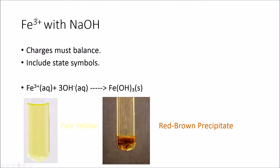Finally, Fe3+ with sodium hydroxide. This time there's a different charge: 3+. To balance the charges to zero, we need three OH- ions, giving Fe(OH)3 with a subscript of 3, written as a solid. The colour change: Fe3+ starts as a pale yellow solution — even paler than shown — and when it reacts with hydroxide ions to form iron(III) hydroxide precipitate, the colour becomes a reddish-brown, rusty, murky colour.